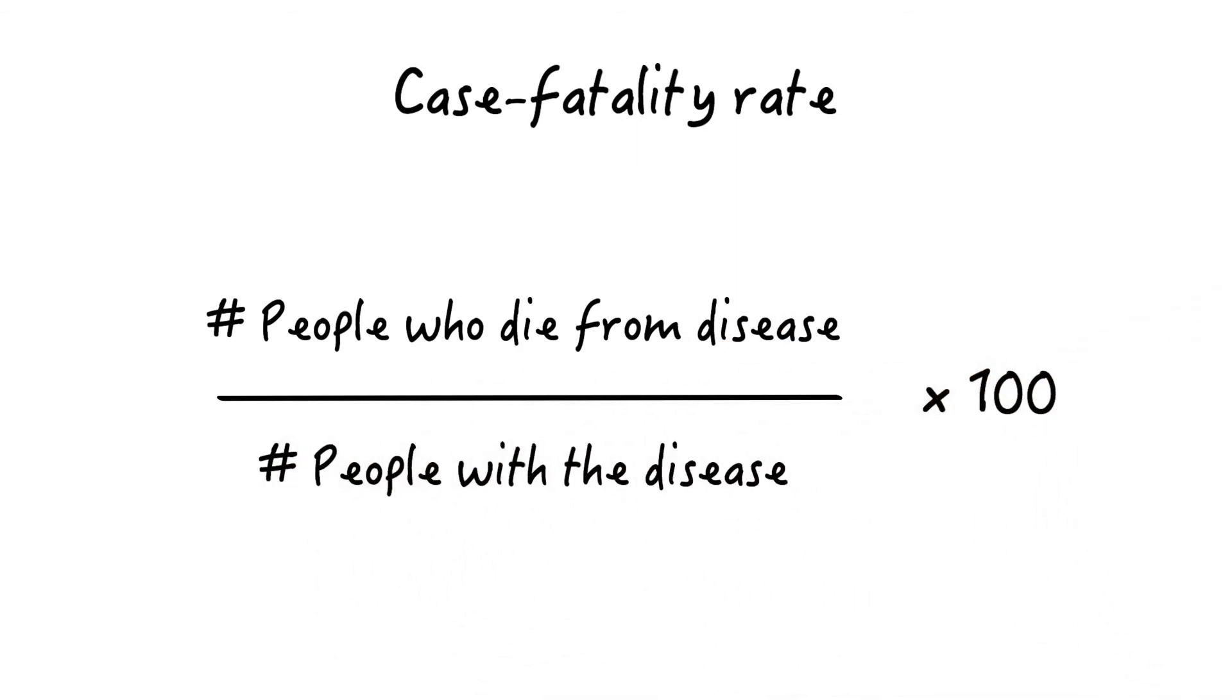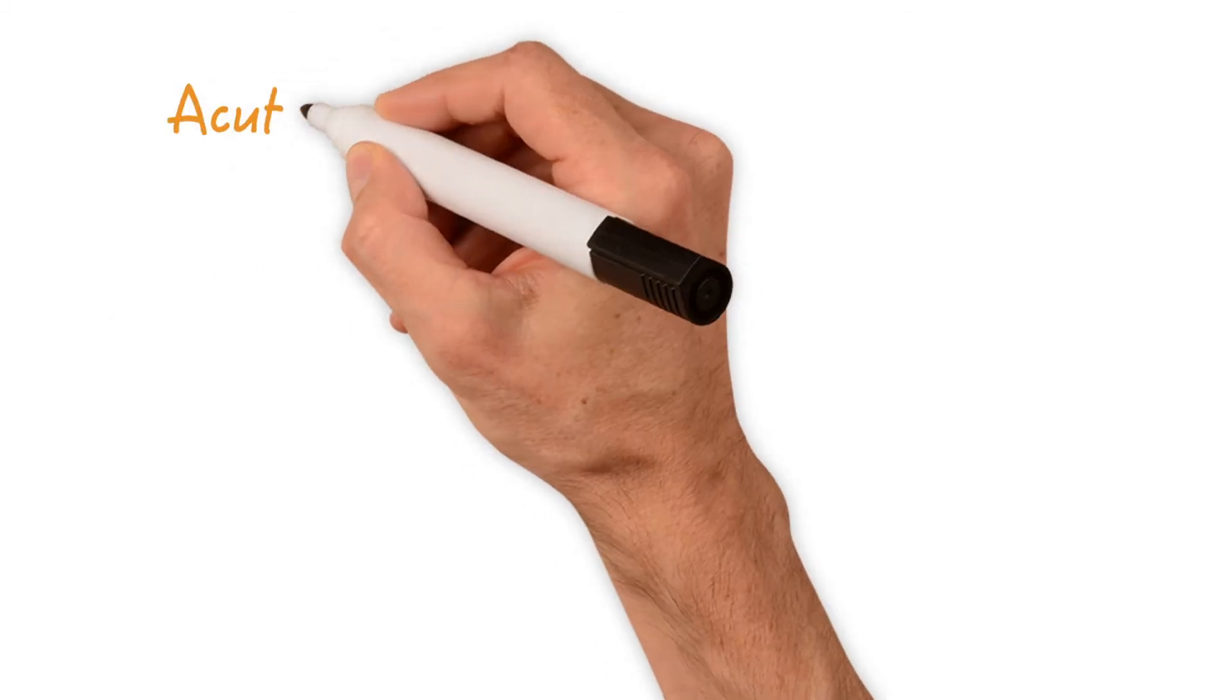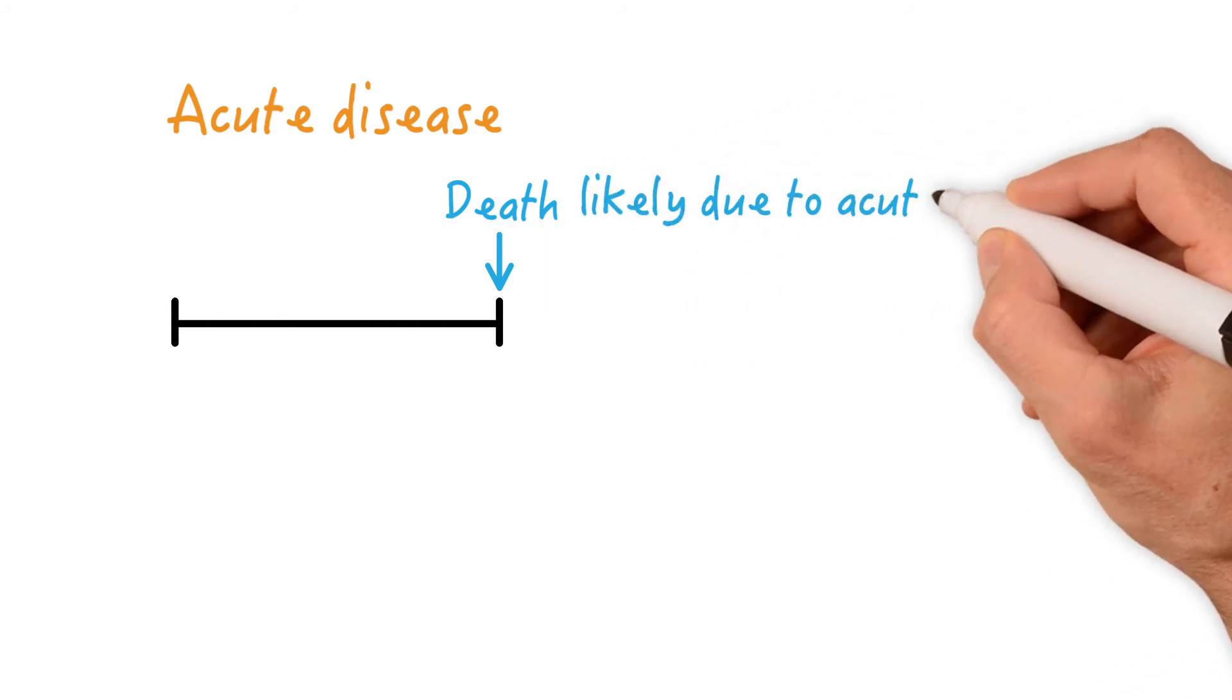Case fatality rate is generally used for acute diseases, and here's why. So, this is the duration of the acute disease. If a person with the disease dies within this short time period, it's very likely due to his acute illness.